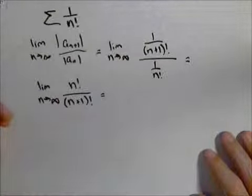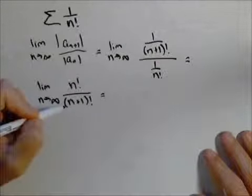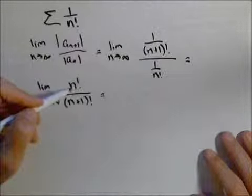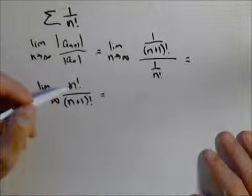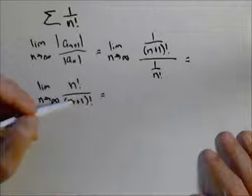We're going to simplify and see if we can calculate the limit. Now here's where our knowledge of factorials has to be strong. A factorial is the product of one up to whatever integer we have here. So this is the product of one to n. This is the product of one to n plus one.